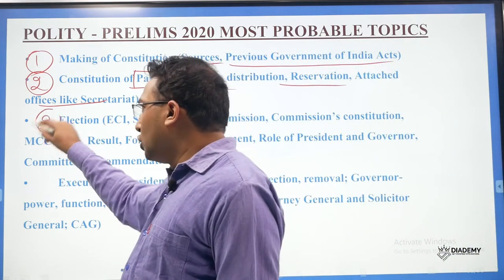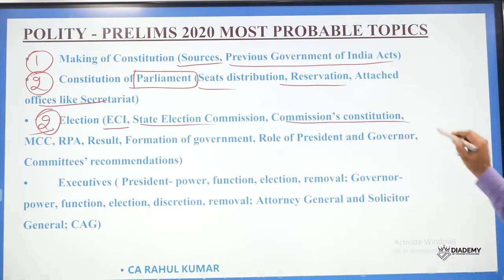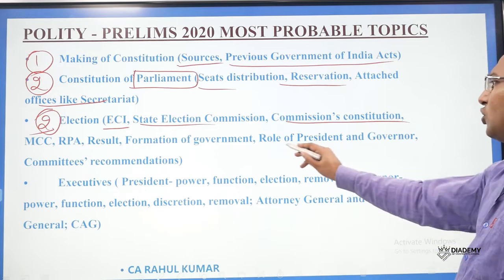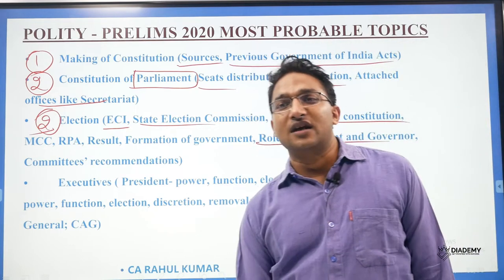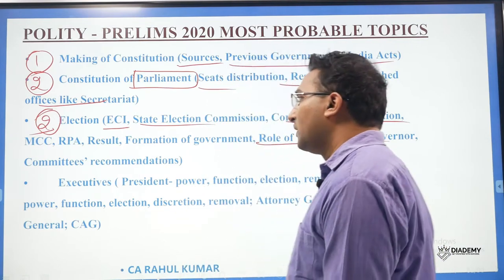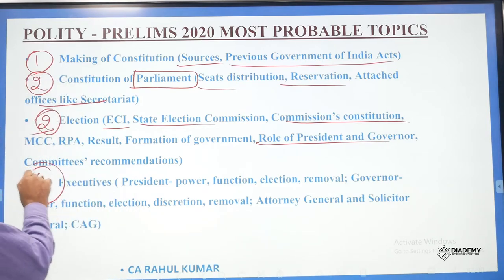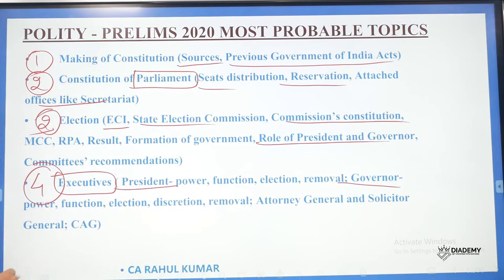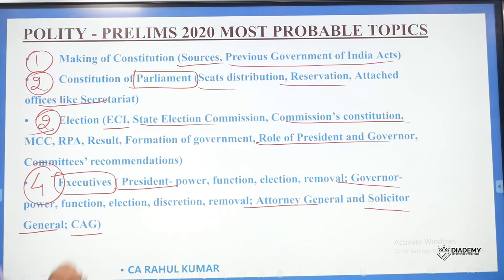You should know about the ECI, State Election Commissions, the Constitution, MCC, RPA, result, formation of government, role of President, role of Governor, and various committee recommendations — for example, the Indrajit Gupta Committee for state election funding. In the executive, we have to go through the President, Governor, Attorney General, Solicitor General, and CAG.